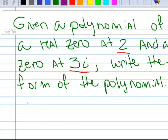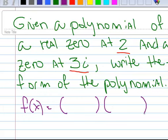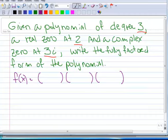So we know when we're done we're going to have a polynomial that has three factors. It has three factors because it's degree 3. So let's go ahead and write the ones that we know.